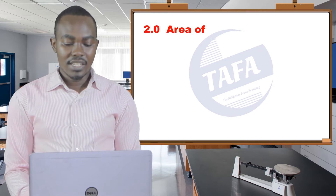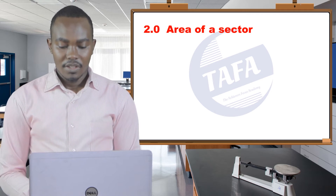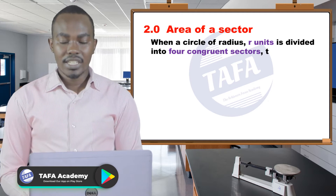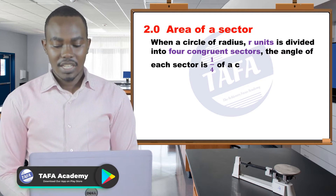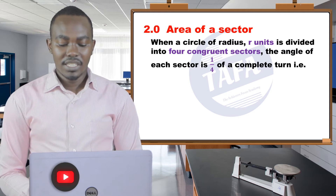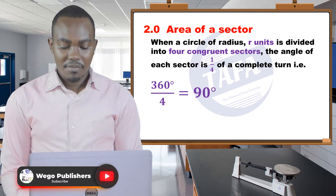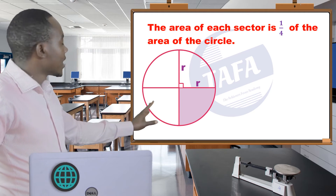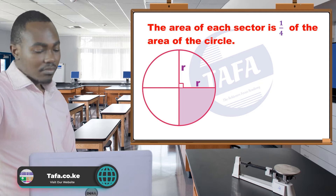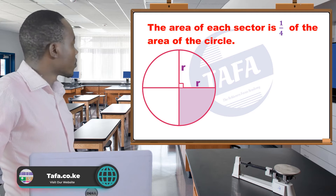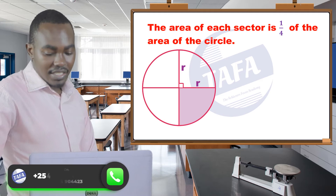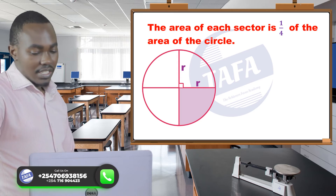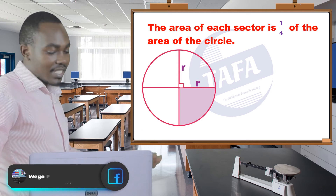We begin by looking at the area of a sector. When a circle of radius r units is divided into four congruent sectors, the angle of each sector is a quarter of a complete turn — that is, 360 degrees divided by four, giving 90 degrees. So we have a circle with center O and radius r units, divided into four congruent sectors, each with a central angle of 90 degrees.